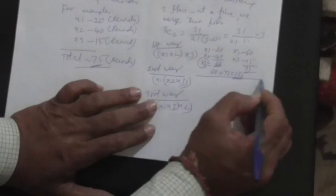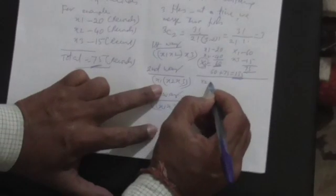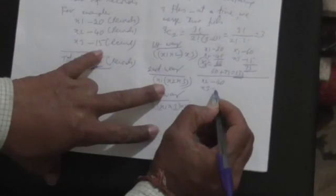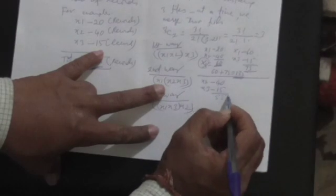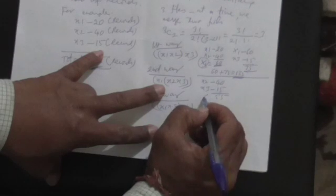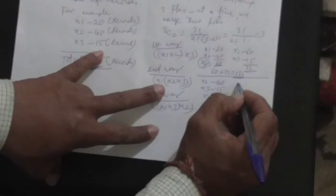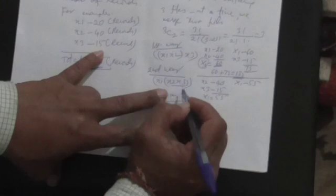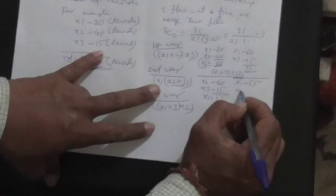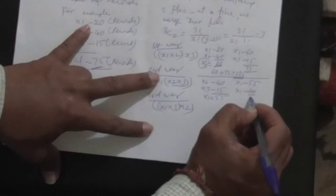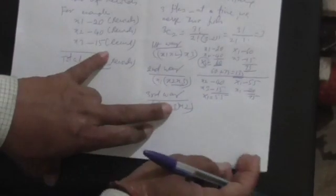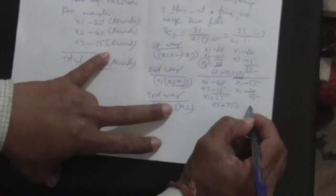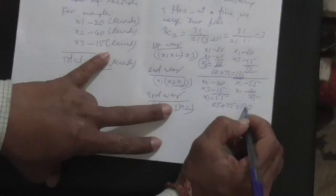Going for the second one, first it is X2 and X3. X2 has 40 records, X3 has 15 records, so totally there are 55 records. Then this is merged with X1, which is 20, so it is 75. If you observe the number of merges you have made, first you made 55 and then 75, so totally 130 merges.